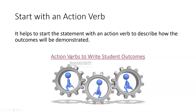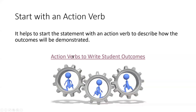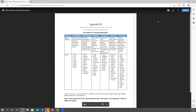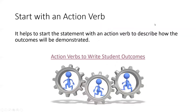The action verbs resource for writing student outcomes is based on Bloom's Taxonomy. It goes through the taxonomy, describes what each level entails, and provides verbs you might use to define those pieces. These tools are not meant to be condescending — they're resources that people have asked for, which is why they're being addressed in this session today.